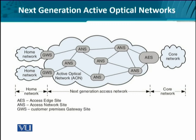The entire access network, or a mesh of access networks, is connected to the core network. The core network could be any other technology or it could also be based on active optical networking. However, in order to provide interfacing between these two, we need an access edge site — that is some kind of network-to-network interface. On the left hand side we see different home networks. These home networks are small networks housed within a single building for either residential or commercial use. To provide interfacing with the access network, we need gateways as the premises gateway sites.